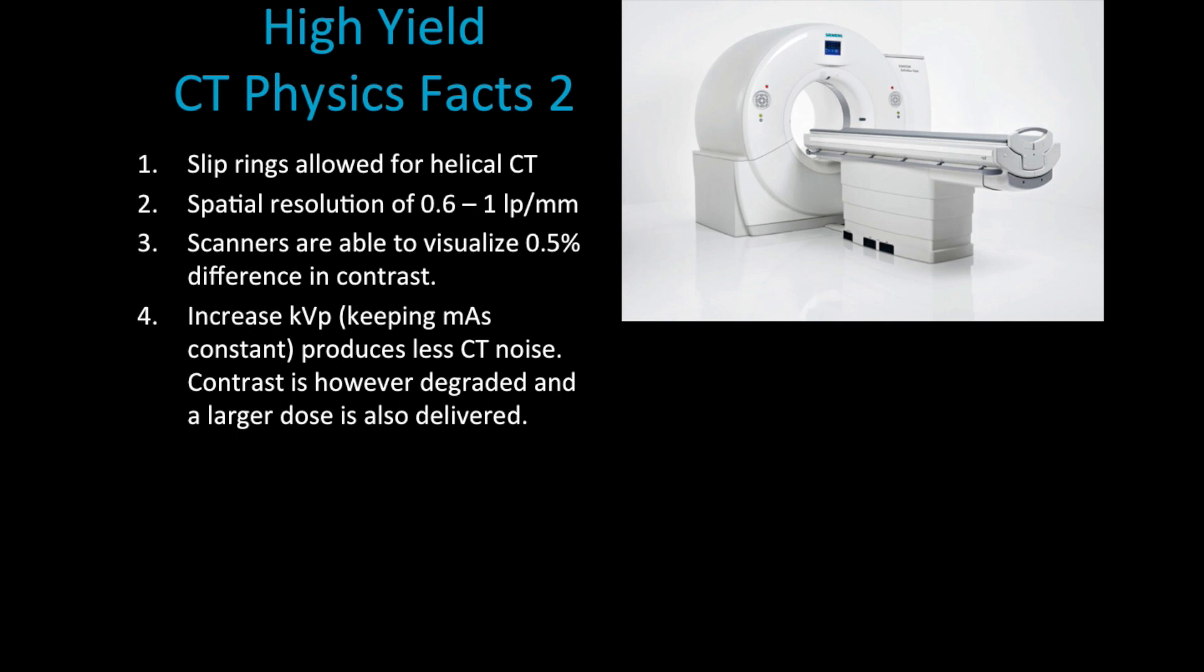This part here should probably be in red. What happens when we increase kVp but we're keeping the mAs constant? Well, we produce less noise because we have more x-rays reaching the detector. However, our contrast is in theory degraded because we have more penetrating x-rays, and the patient does receive a larger radiation dose.